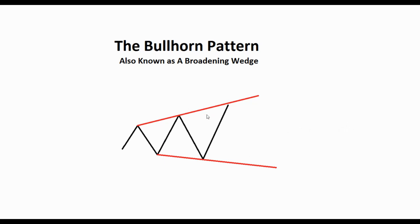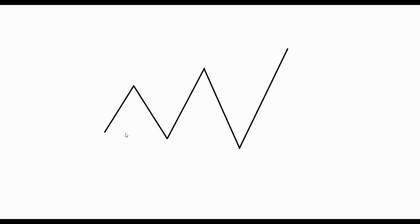This pattern does the exact opposite — the inverse — of what an asymmetrical triangle wedge would do. In a previous video, I explained how an asymmetrical triangle squeezes in with lower highs and higher lows, but this is the exact opposite. You're going to have erratic behavior in the market where the pattern is widening. You'll have a high point, a low point, then a higher high, but also a lower low.